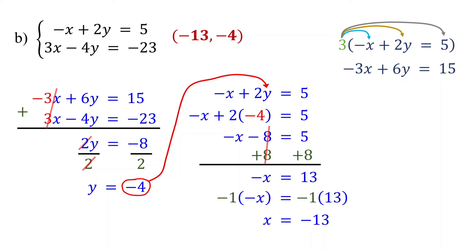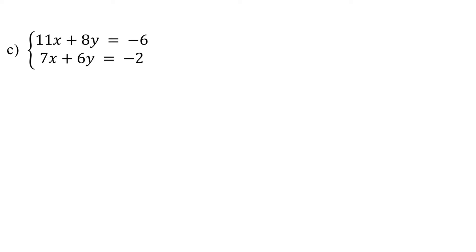In this example, we were able to make the coefficients of one variable opposites by multiplying only one of the equations by a constant. However, in the next example, it doesn't appear that we can do this by multiplying just one equation. This is because there is no integer by which you can multiply 11 to get negative 7, or multiply 7 to get negative 11, since 11 and 7 are not multiples of each other. The same goes for 8 and 6.